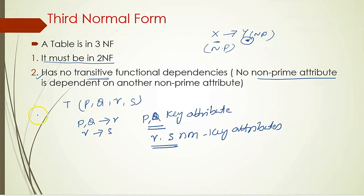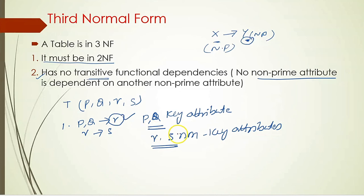So assume that this table is in second normal form. According to the second rule of third normal form, no non-prime attribute is dependent on another non-prime attribute. Look at the first functional dependency: R is a non-key attribute dependent on P,Q — and P,Q are key attributes. So this functional dependency — a non-prime attribute dependent on a prime attribute — actually satisfies this condition. No problem there.